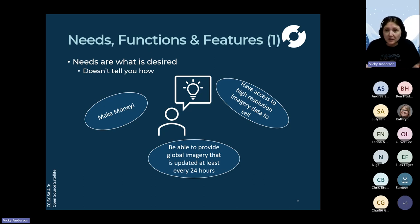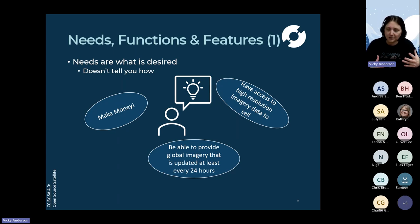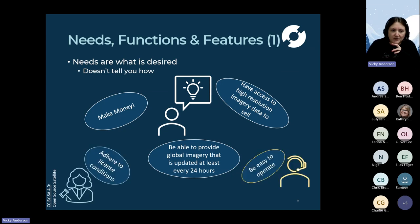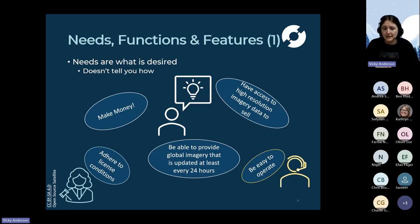Buying and reselling imagery comes with limitations: you're dependent on a supply chain that may not be robust, you have limited influence over the quality of imagery taken, and there could be copyright issues. So let's assume they've decided to have their own satellite system. This brings in needs from other stakeholders - regulators want to ensure it meets licensing conditions, and operators want something easy to operate and control, since they're the ones dealing with the satellite on a day-to-day basis.